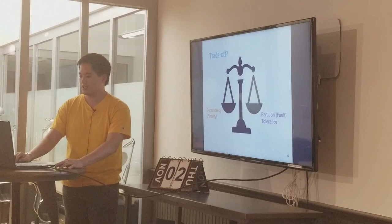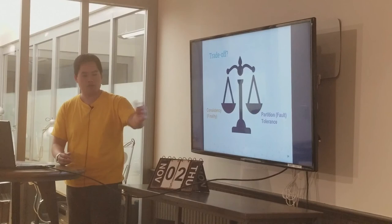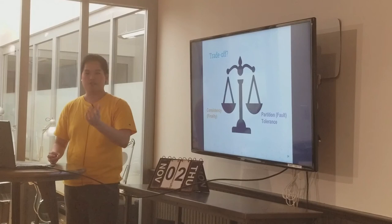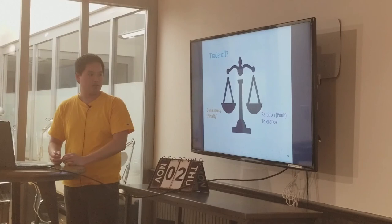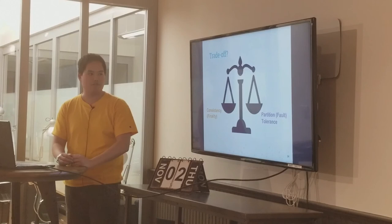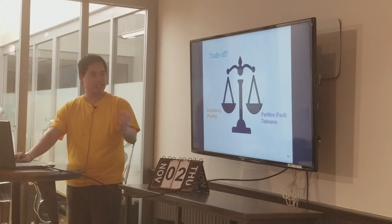The main tradeoff is between consistency or finality at a fixed point in time versus partition tolerance. If you want partition tolerance, you need to be okay with parts of the network branching off with different data sets and merging back, giving up on complete consistency as seen in Bitcoin.